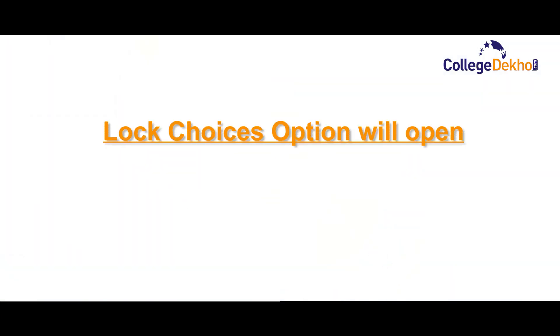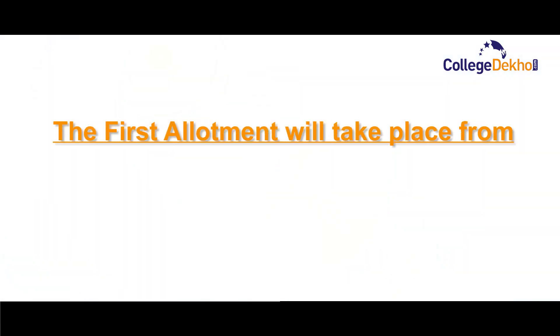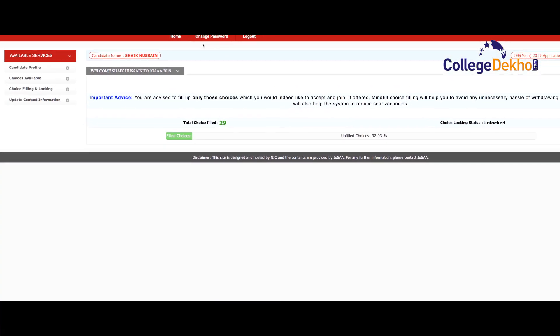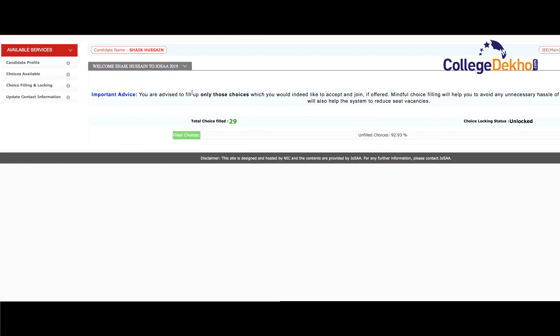Step 7: The lock choices option will open on June 25th, 2019 and the first allotment will take place from June 27th, 2019. Do visit and check the allotment accordingly.